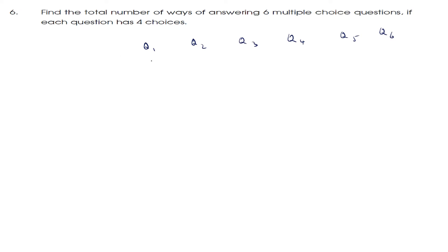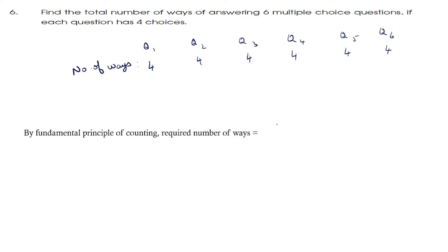Next question: find the number of ways of answering 6 multiple choice questions if each question has 4 choices. There are 6 multiple choice questions and each has 4 choices. Each question — Q1 through Q6 — can be answered in 4 ways. By the Fundamental Principle of Multiplication, the required number of ways is 4 raised to 6. When we simplify, we get 4096. So the required number of ways is 4096.